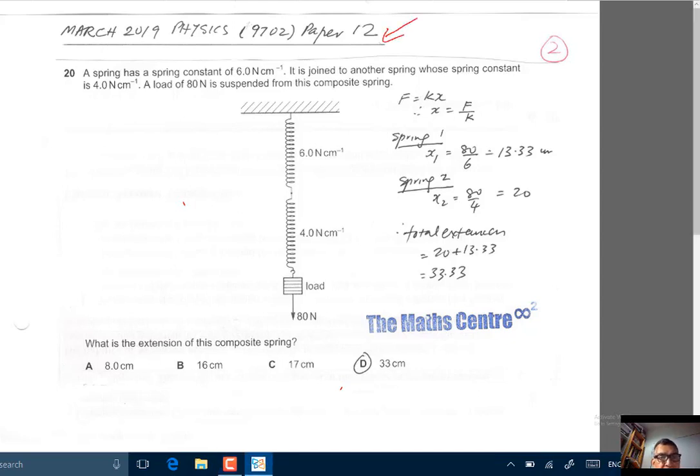The question: a spring has a spring constant of 6 Newton per cm, is joined to another spring whose spring constant is 4 Newton per cm. A load of 80 Newton is suspended from this composite spring. We have a picture here. What is the extension of this composite spring?